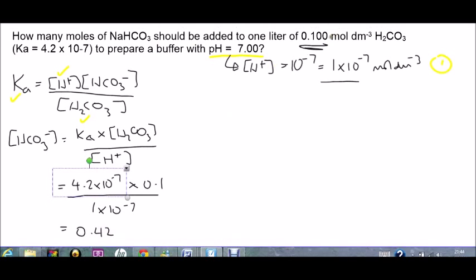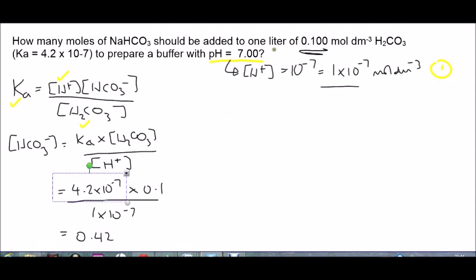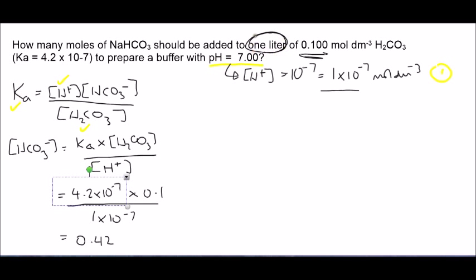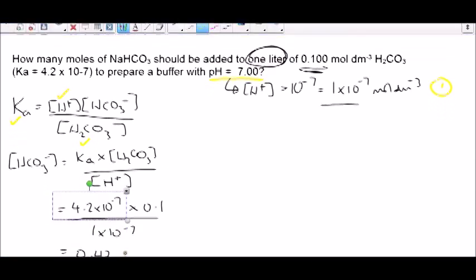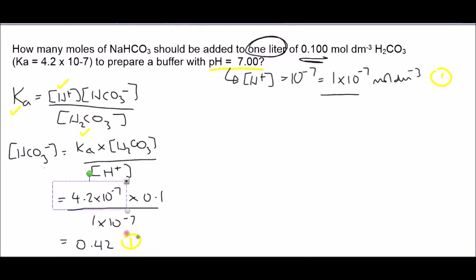And, fortunately, because we're working in 1 dm³ — remember, litre is the same as a decimetre cubed — what we need to add is 0.42 moles. And that's our final answer.